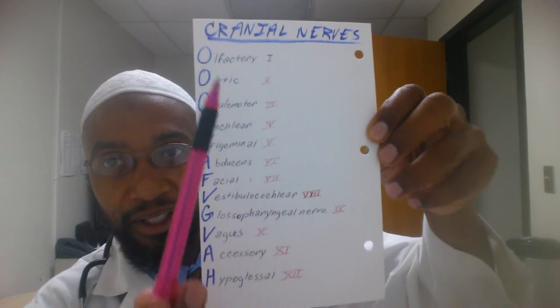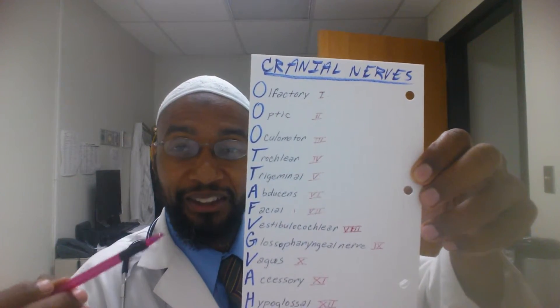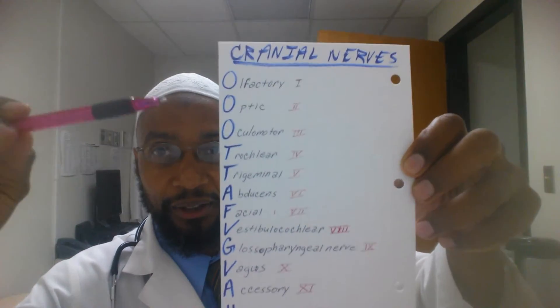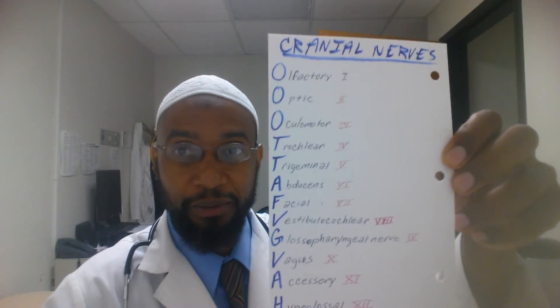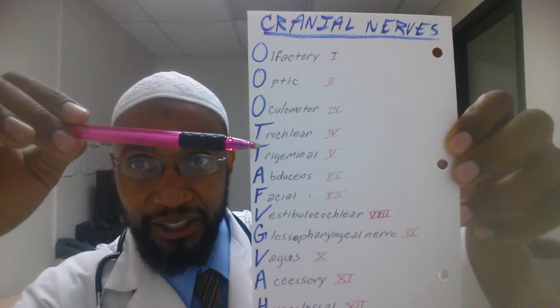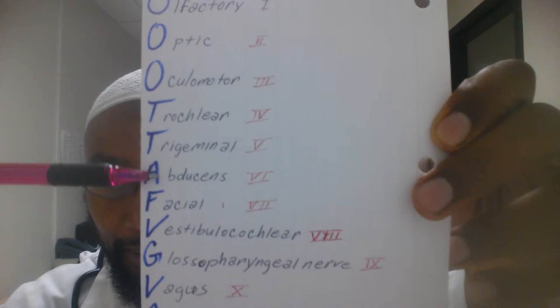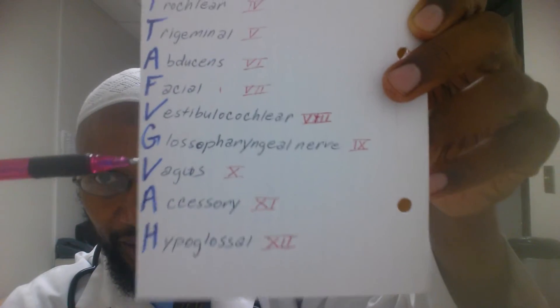Another thing to memorize before you start your program: the 12 cranial nerves. You're going to need this in anatomy. I don't care what school you go to — nursing, PA, nurse practitioner, med school — you've got to know these. Olfactory, optic, ocular motor, trochlear, trigeminal, abducens, facial nerve, vestibulocochlear, glossopharyngeal, vagus nerve — also called the wandering nerve — accessory nerve, hypoglossal. See, it's just 12 of them. Make your own mnemonic; it will make it a lot easier.